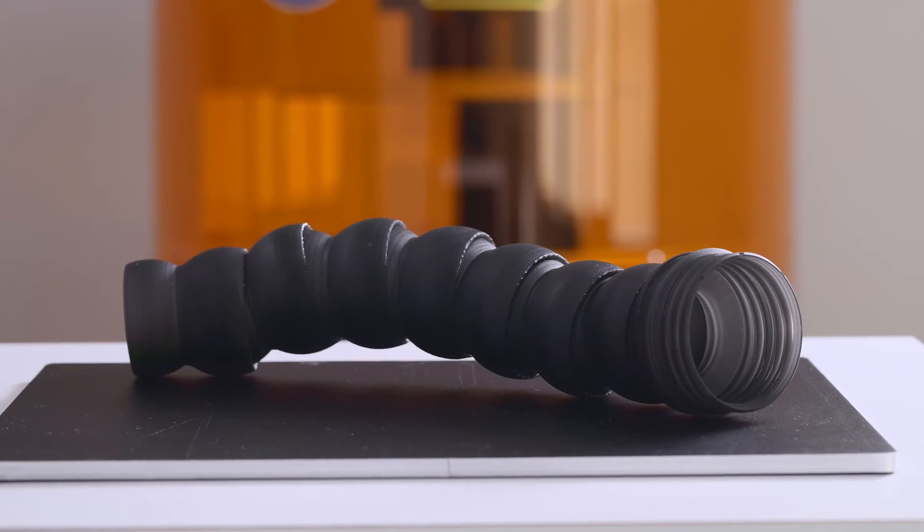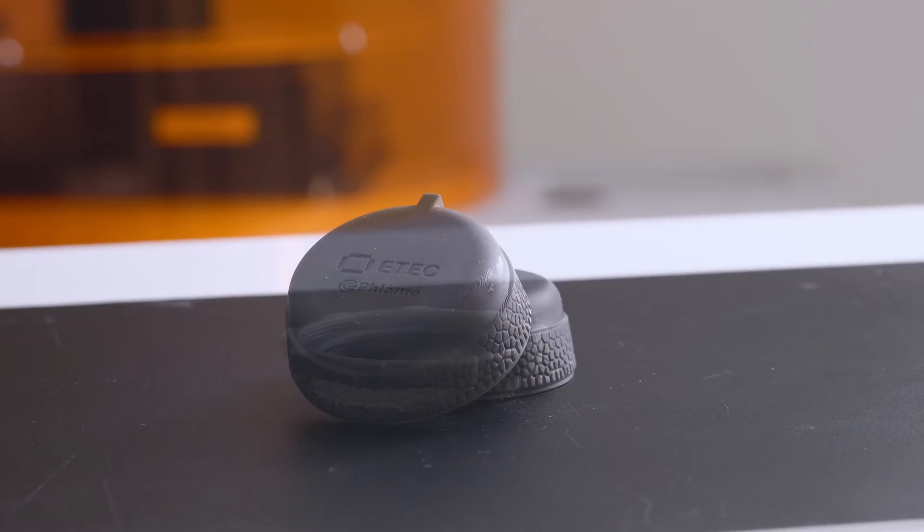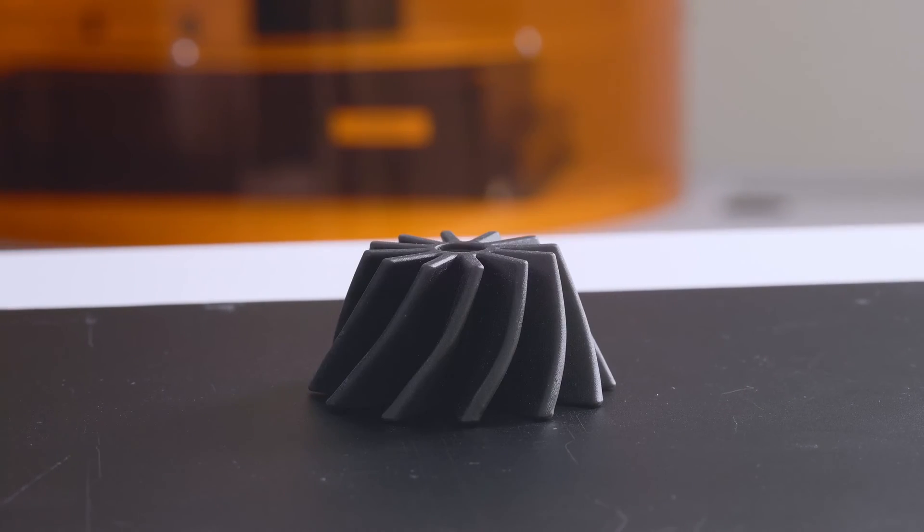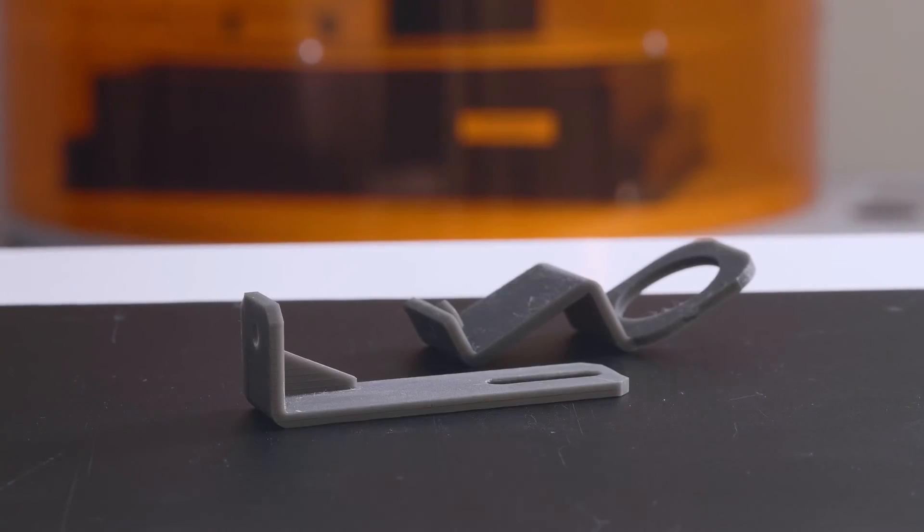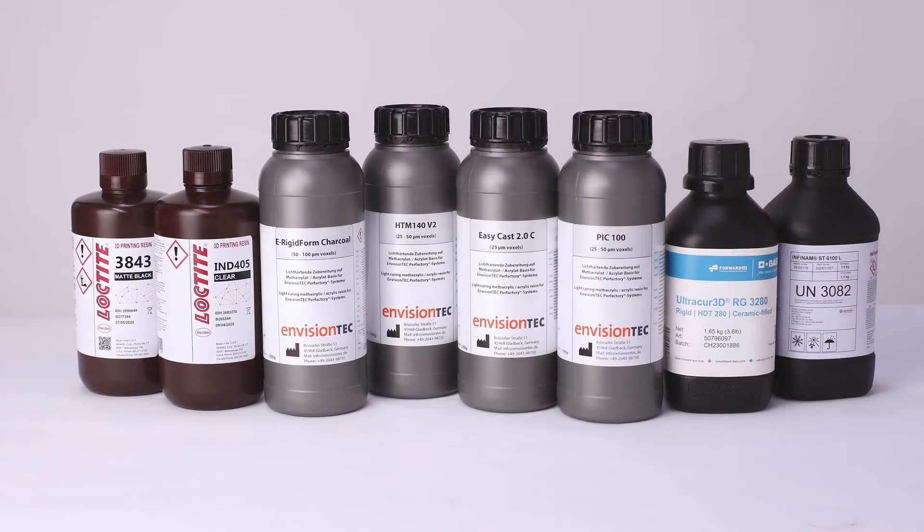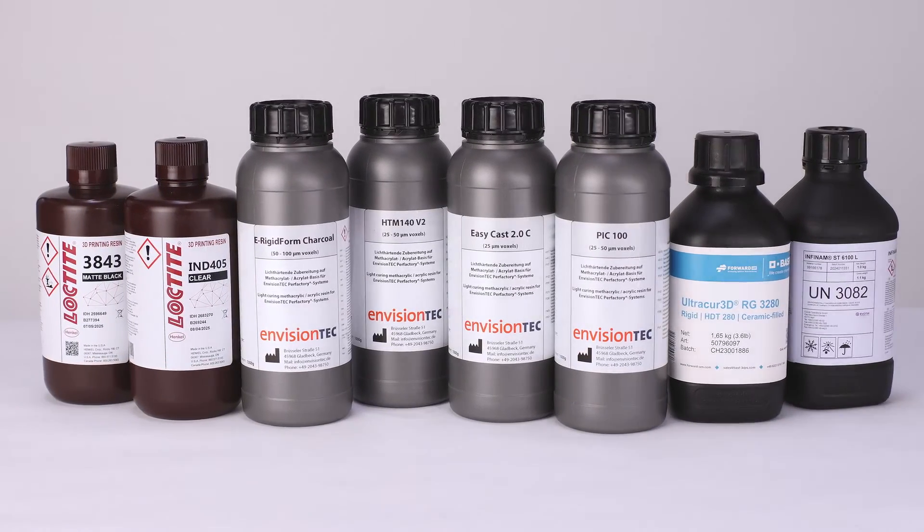The material portfolio for the ETEC Pro XL meets the performance needs of a wide range of durable, rigid, high-temp, castable, and tooling applications. It also includes third-party materials from trusted brands such as Henkel Loctite, IONIC, and BASF.